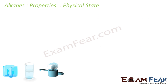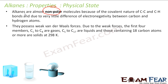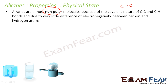Let's start with the physical state. Alkanes are almost non-polar. Why? Because they have all single bonds. Any alkane has all single bonds, so all carbons are sp3 hybridized. There is not much electron density transmitted to carbon. Also, the electronegativity difference between carbon and hydrogen is not that much. So it's all non-polar.